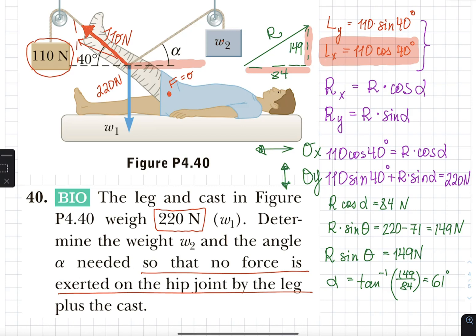That component x equals to this so if again if you did 110 times cosine of 40 that is where 84 came from and that is the x component of the force on the right because they have to balance each other out vertically.